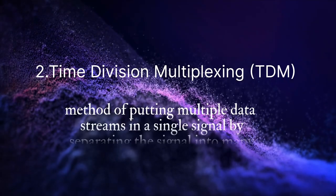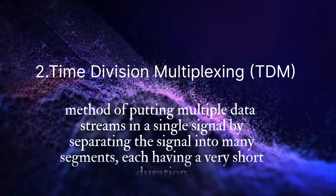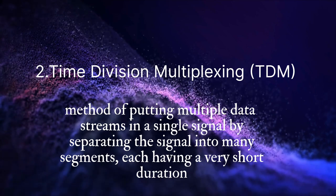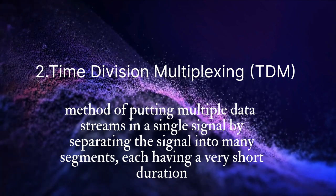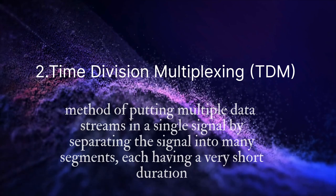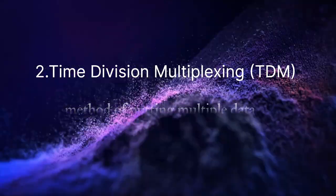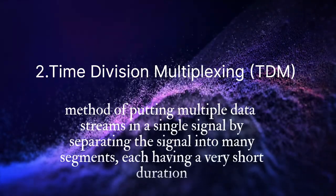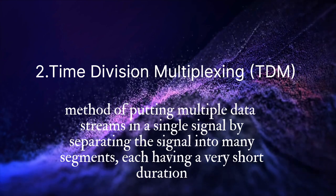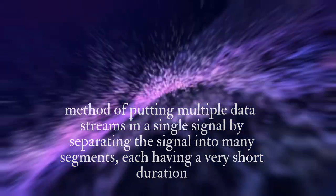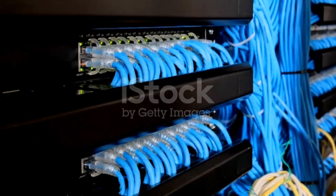Time Division Multiplexing: a method of putting multiple data streams in a single signal by separating the signals into many segments, each having a very short duration, is called Time Division Multiplexing.